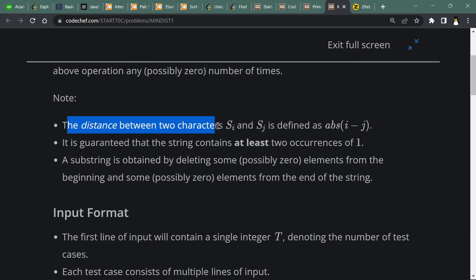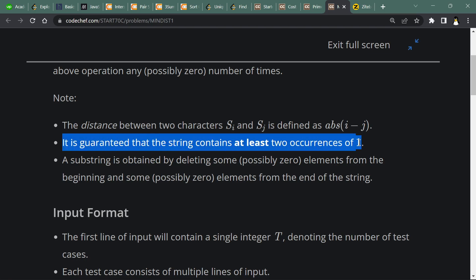Note: the distance between two characters Si and Sj is defined as absolute difference between their indexes i and j respectively. It is guaranteed that the string contains at least two occurrences of one.